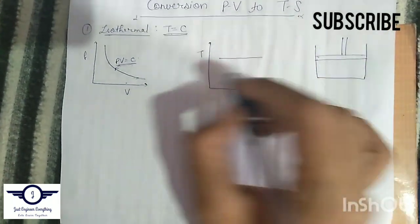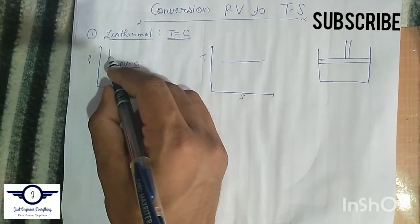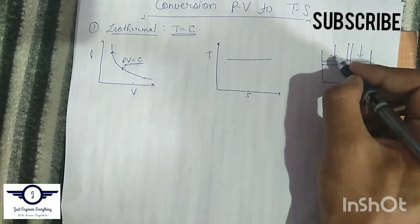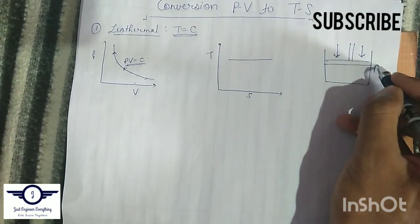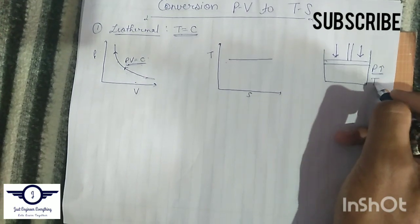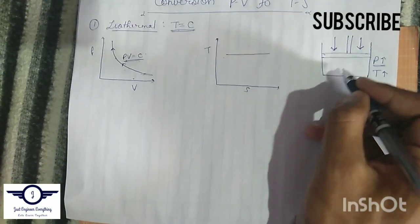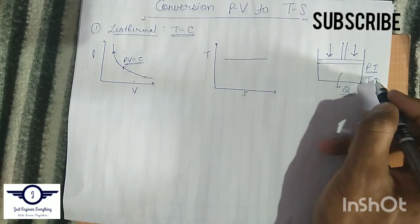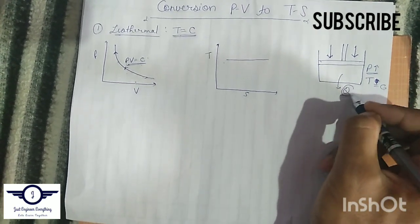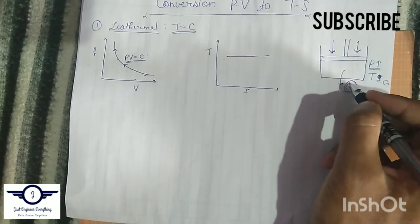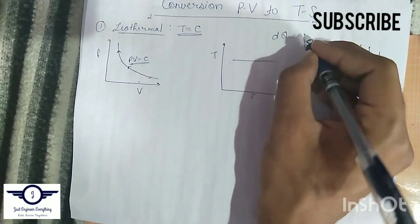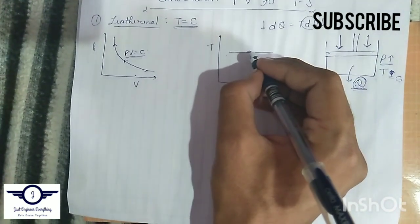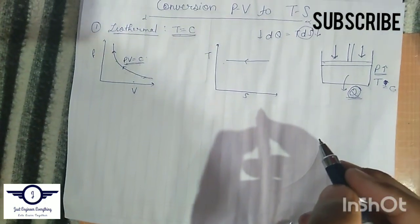If the direction is such that pressure is increasing, some work is being done on the system, which should raise the temperature. But since temperature remains constant, the system must be rejecting heat. Since heat is being rejected, and dQ = T·dS, the entropy will definitely decrease. So the isothermal process on the TS diagram is a horizontal line moving from right to left — entropy decreasing at constant temperature.